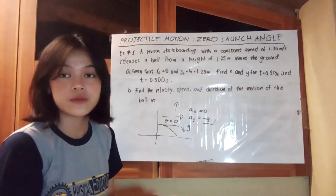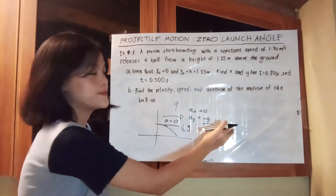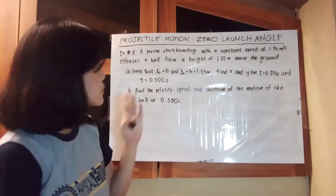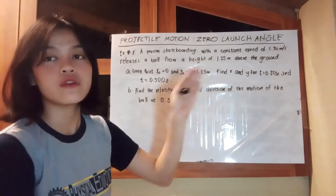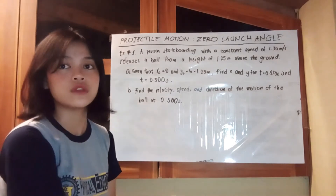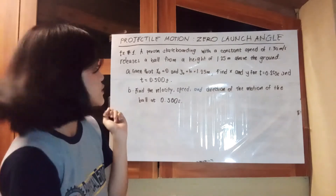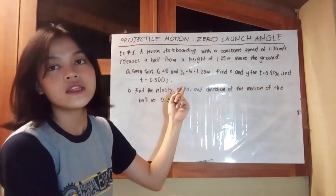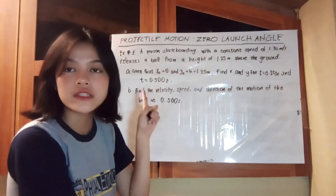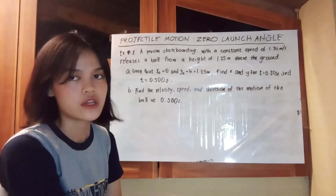Now that we know these simple concepts, let's move forward to our sample problem. A person skateboarding with a constant speed of 1.30 meters per second releases a ball from a height of 1.25 meters above the ground. Given that x₀ equals 0 and y₀ equals 1.25 meters, find x and y at time 0.250 seconds and time 0.500 seconds.